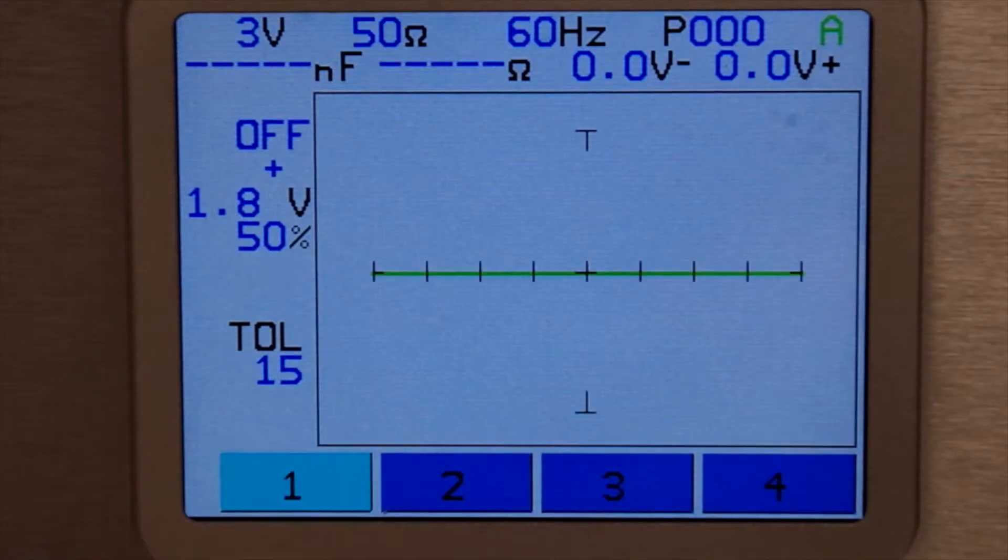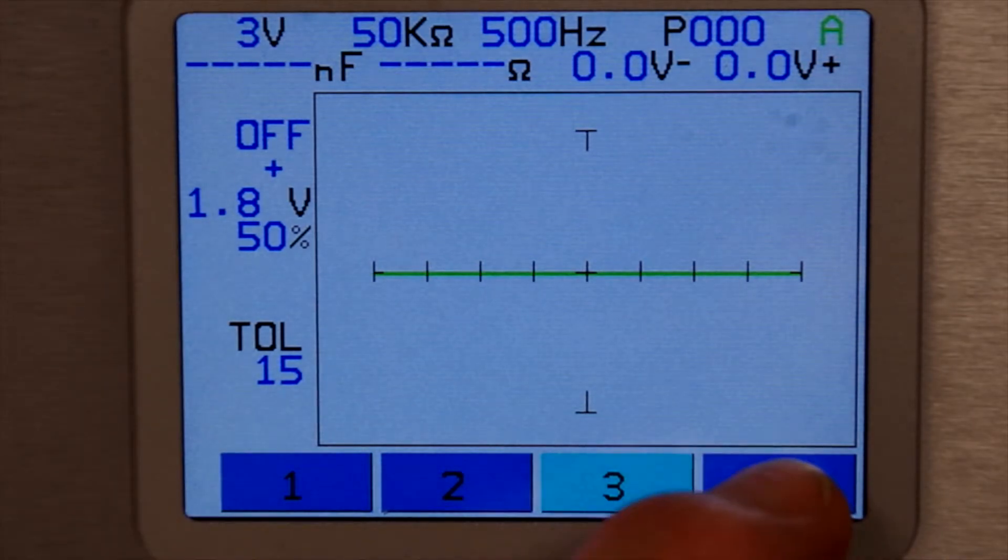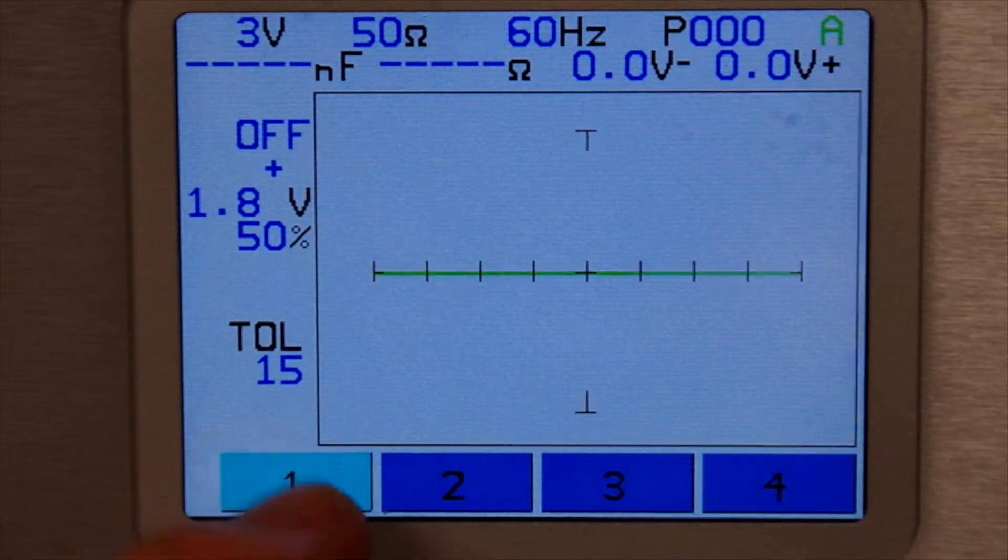Most tracker users have their preferred range settings and the tracker 3200S can save four range combinations that you use the most. These can be selected on the touch screen display.